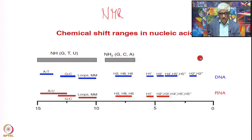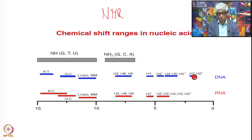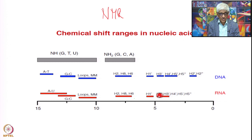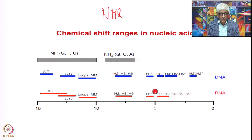Coming to RNA: RNA does not have the H2'' — it has only one H2' and H2'' does not exist in RNA. Because there is an OH group at the 2' position, the H2' gets shifted to a different area. H2', H3', and H4' all fall in the same region, making it quite a crowded area in the case of RNA.